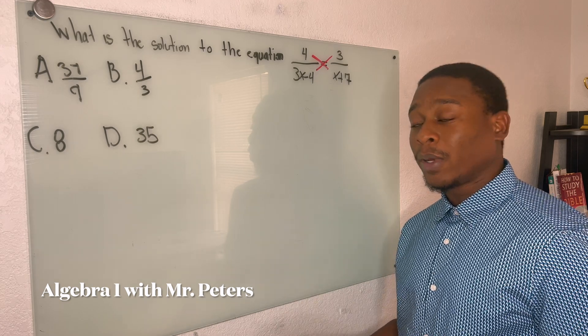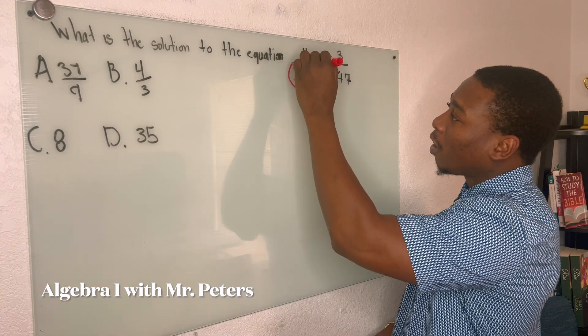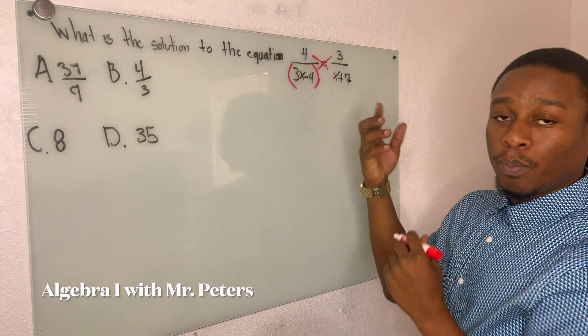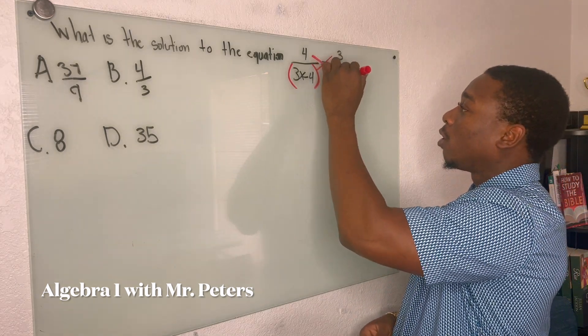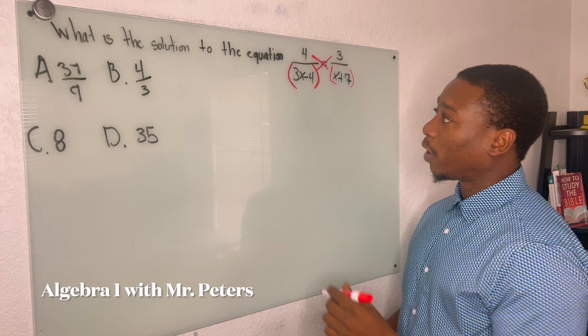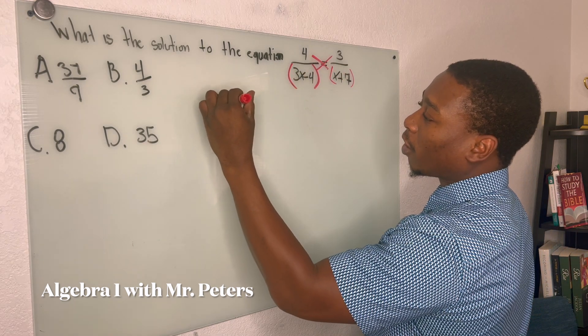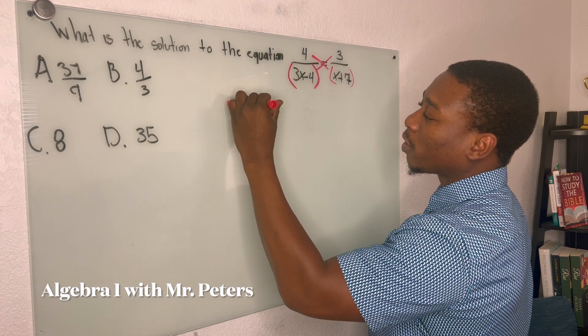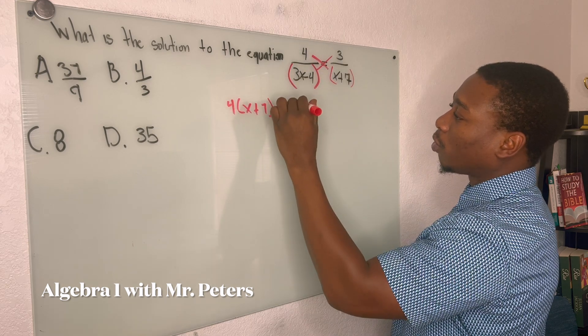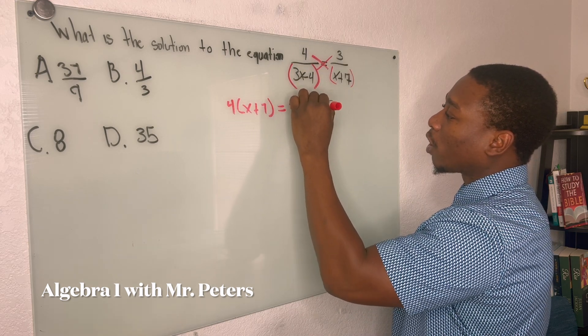And just as a helpful tip, I tell my students, if you have more than one term, put parentheses around it so we know what we're going to be distributing and multiplying. So we have 4 on the outside and then in parentheses x plus 7. And this is equal to 3 and then in parentheses 3x minus 4.